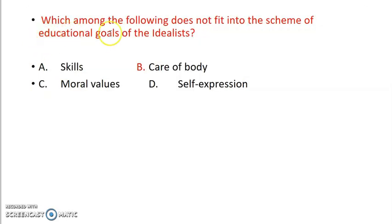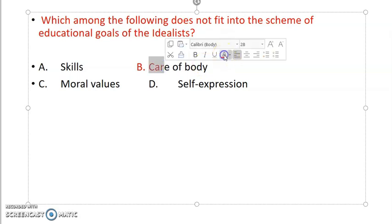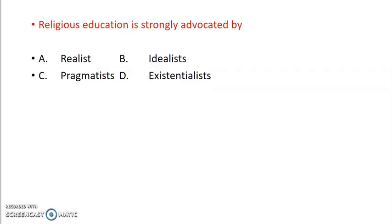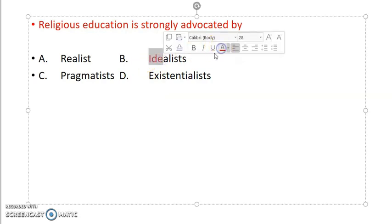Next is: which of the following does not fit into the scheme of educational goals of idealists? Educational goal - skill, care of body, moral values, or self-expression. Religious education is strongly advocated by which thought? Realistic, idealistic, pragmatist, or existentialist? So obviously idealistic, because idealistic focuses on religious value, emotion, moral value - all these things.